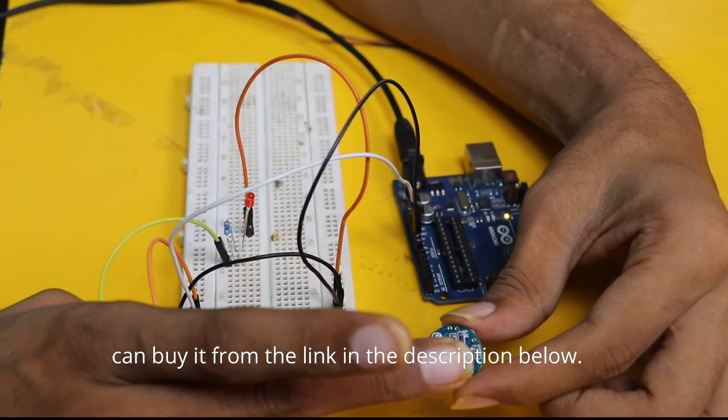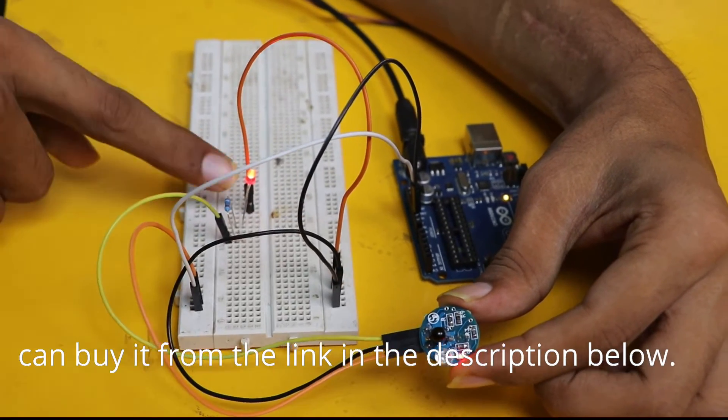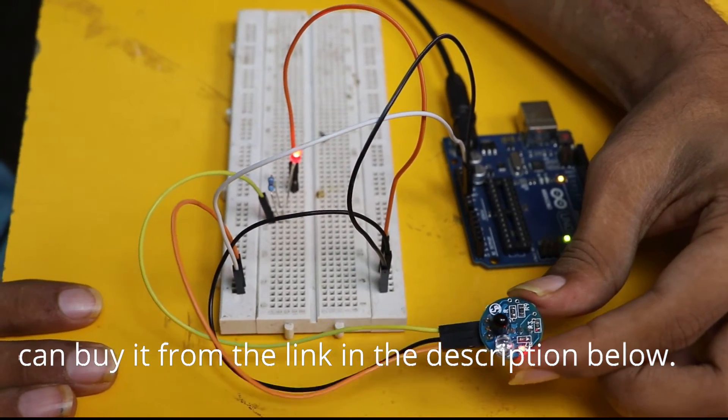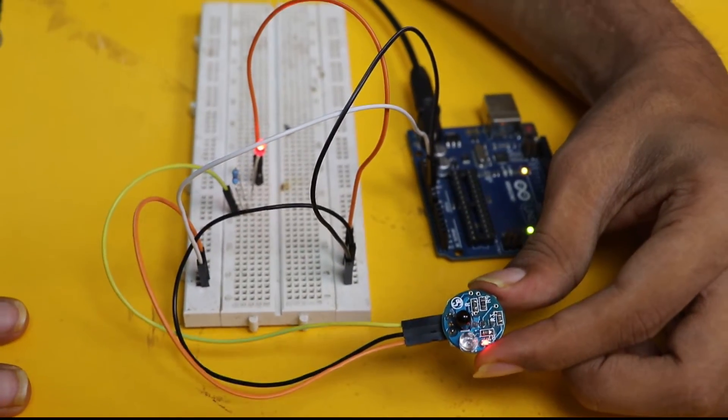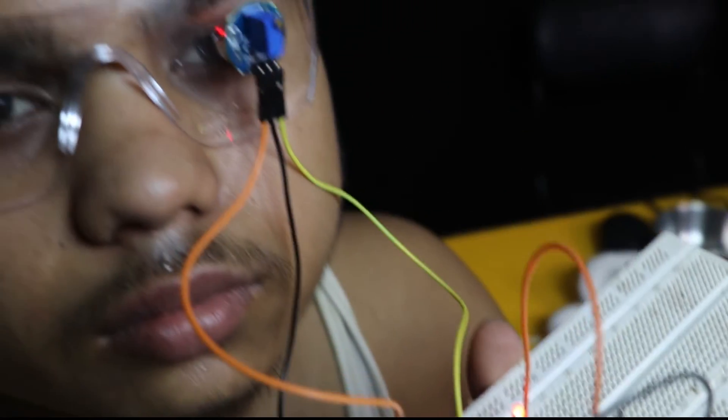They will generate zero when a hand is in front of the IR sensor and they will generate high or you can say 5 volts when there is nothing in front of the eye blink sensor. This is like a simple IR sensor as usual you use in other projects.